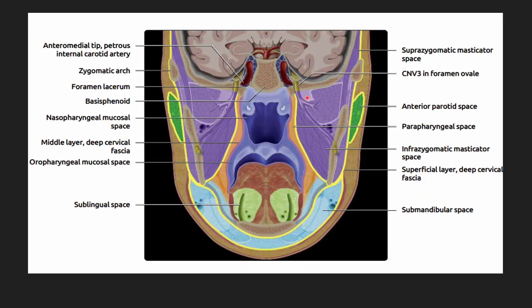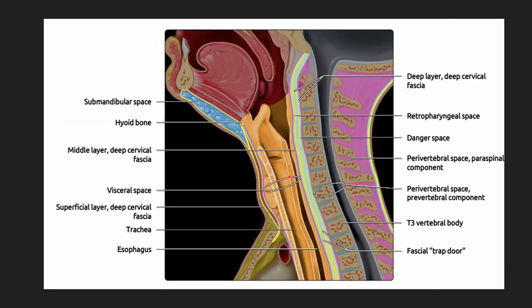On both sides we can appreciate the posterior cervical space which has fat as its component. Coming to the coronal section, this is our masticator space. Here we have the temporalis muscle and the parotid space, and in the anterior reach we have the submandibular space and the sublingual space which are better appreciated in coronal images only. This is the sagittal image where we can appreciate the middle layer of deep cervical fascia enclosing the retropharyngeal and the danger space. Posteriorly we have the perivertebral space with the paraspinal and prevertebral space as its components.